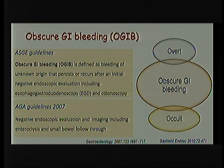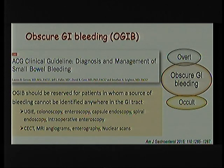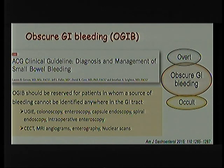For a while there has been debate on what we call obscure GI bleed. Initially, guidelines from the American Society of Gastrointestinal Endoscopy defined it as negative upper GI and colonoscopy. AGA updated the previous guidelines to include negative CT angiography before calling it obscure GI bleed. But this terminology has been evolving with the availability of good small bowel evaluation equipment like capsule endoscopy and enteroscopy. Now it is largely limited to cases where no bleeding source is found despite all endoscopic techniques and imaging modalities including nuclear scans.